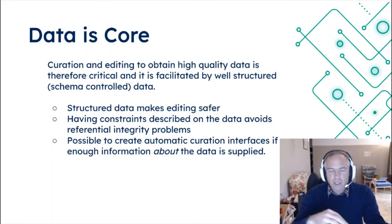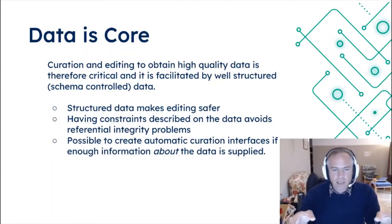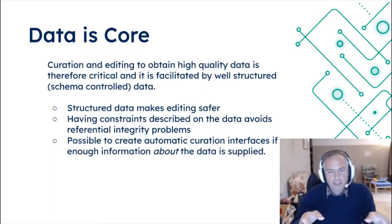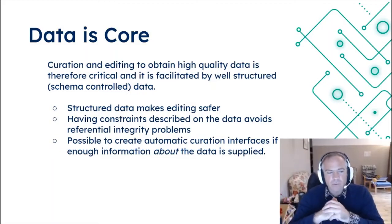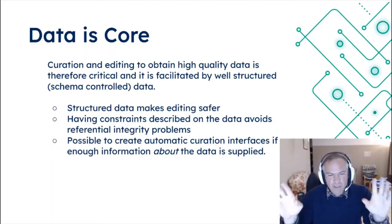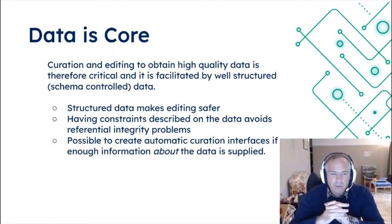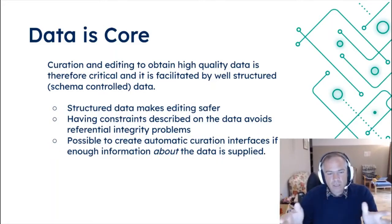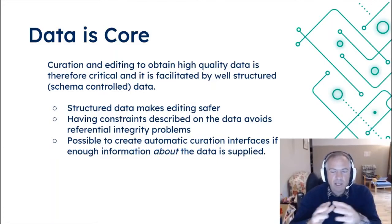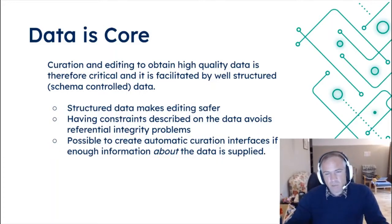Structured data makes that editing safer because you won't change something in an inconsistent way — say if it's a date field, you will add a date to it. So if you have structured data that has constraints on the types of information, that helps to avoid problems. If you have links between different kinds of objects in your data, you also need constraints around referential integrity. Databases provide this. CSVs and Excel don't really — you can to some extent in Excel, but really not at all in CSVs. It has to be imposed as a practice rather than something that can be checked by machine.